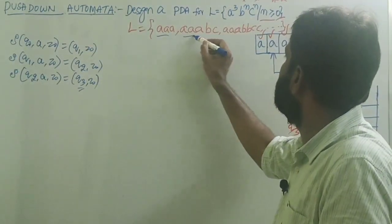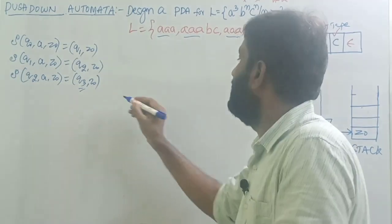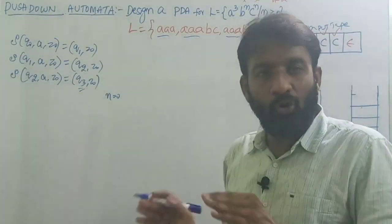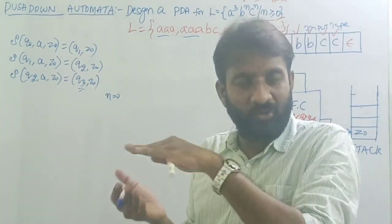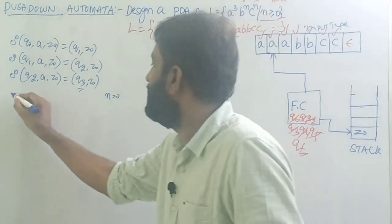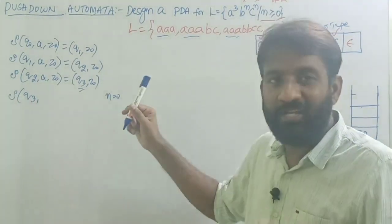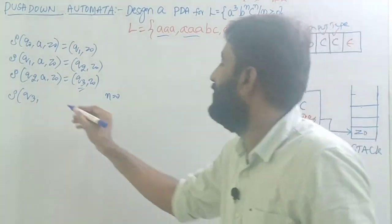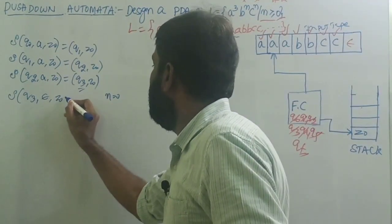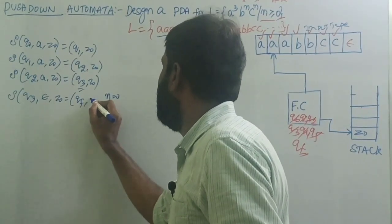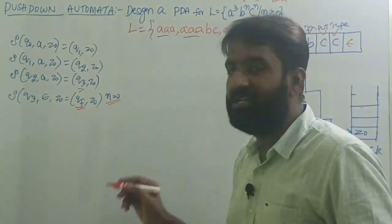Every string must have exactly three A's. Now at this point, assume N equals 0 — meaning there are no B's and no C's, only A's. From state Q3, we can move directly to the final state. The new transition is: Q3, epsilon, Z-naught equals QF, Z-naught. Input is epsilon, top of stack is Z-naught, so we move to the final state. This handles the N equals 0 case.